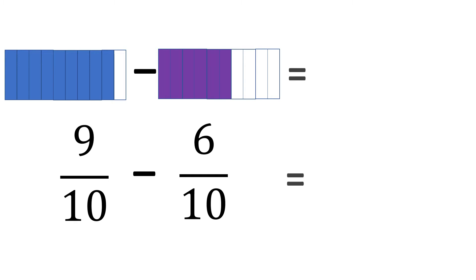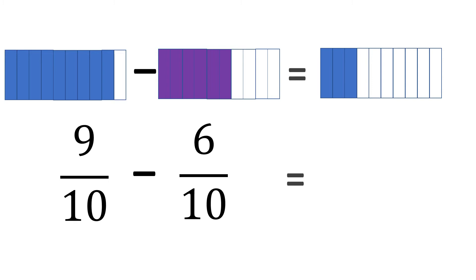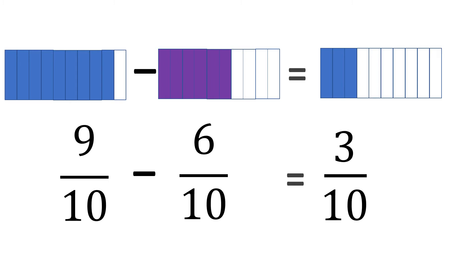What happens to the figure when you multiply the fraction by 2? It actually divides into 2 parts for every part — so if you times 2, the figure is divided by 2. Now it's easier for us to solve because the two figures fit. 9 tenths and we want to remove 6 tenths — so how much is left? That's 3 tenths. Let's solve: copy the denominator 10, and 9 minus 6 is 3. So the final answer is 3 tenths.